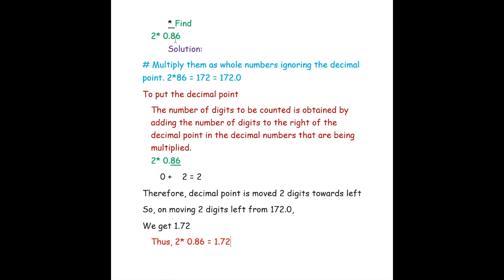Our first question is: find 2 into 0.86. Solution: first we have to multiply them as whole numbers, ignoring the decimal point. Here 2 is a whole number, so we take it as is. 0.86 is a decimal number, so we ignore the decimal point and consider it as 86. So 2 into 86 is 172.